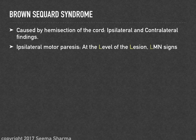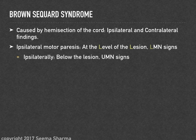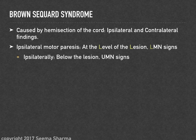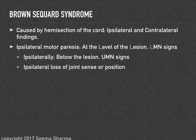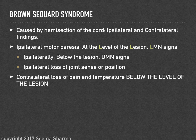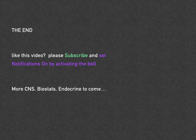Brown-Séquard syndrome is caused by hemisection of the spinal cord. At the level of the lesion, there are ipsilateral lower motor neuron signs; below the lesion, ipsilateral upper motor neuron signs and ipsilateral loss of joint position sense. On the contralateral side, there is loss of pain and temperature below the level of the lesion.